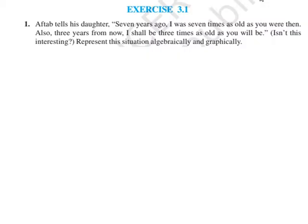Exercise 3.1, Problem No. 1. A father told his daughter: 7 years ago, I was 7 times as old as you were then. Also, 3 years from now, I shall be 3 times as old as you will be. Represent this situation algebraically and graphically.